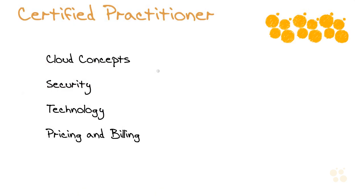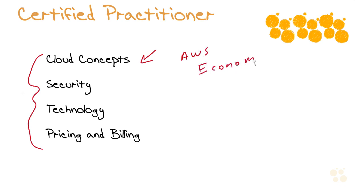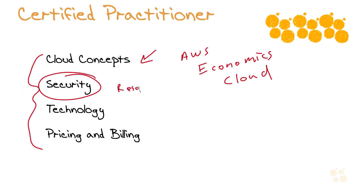To give you complete coverage of everything that exam might contain and also to give you a great head start in the world of AWS, I'm going to break this course down into four main areas. Our nuggets or videos will be focused around cloud concepts — things like what really is AWS and what is the economics of the cloud that makes AWS so exciting. We'll also take a look at many important security topics, including very important resources that Amazon Web Services makes available for us.